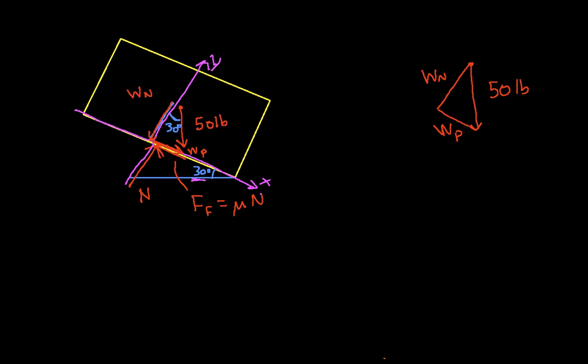So instead of just deciding that we have 50 pounds, let's suppose we just have a weight which we call W. And then W sub N will be W cosine of theta. And suppose that instead of a 30-degree angle here, we have just an angle theta, which we haven't actually specified. So we have W N as W cosine theta. W P is equal to W sine theta.